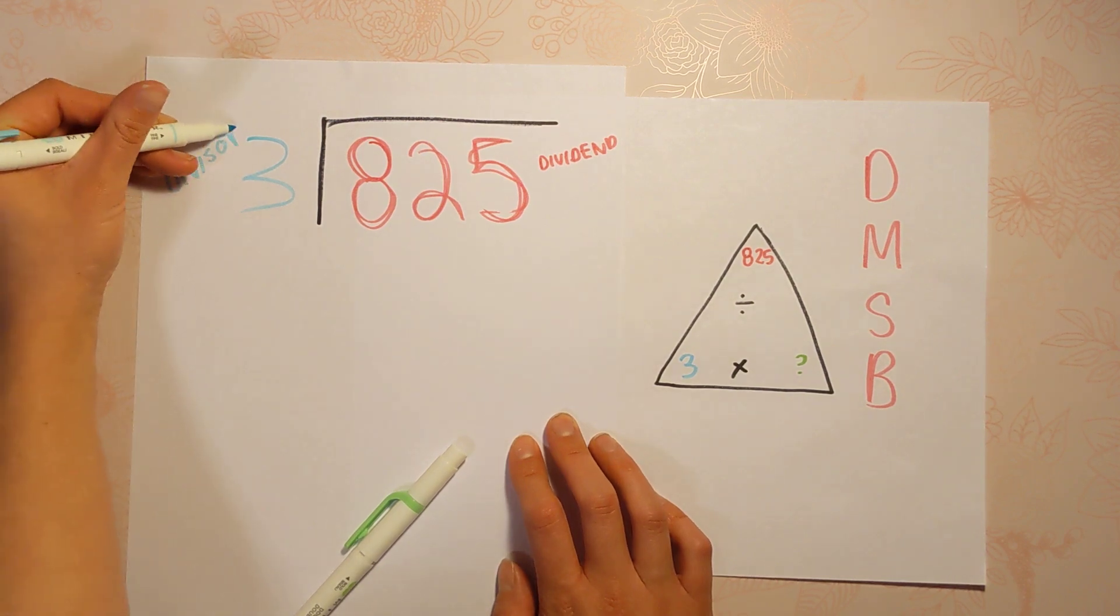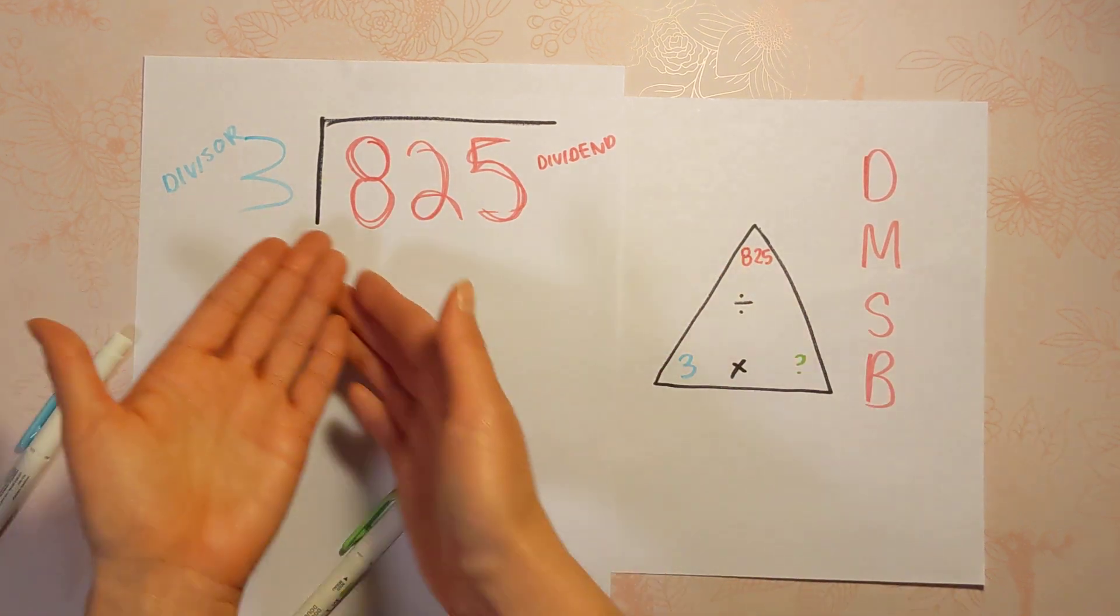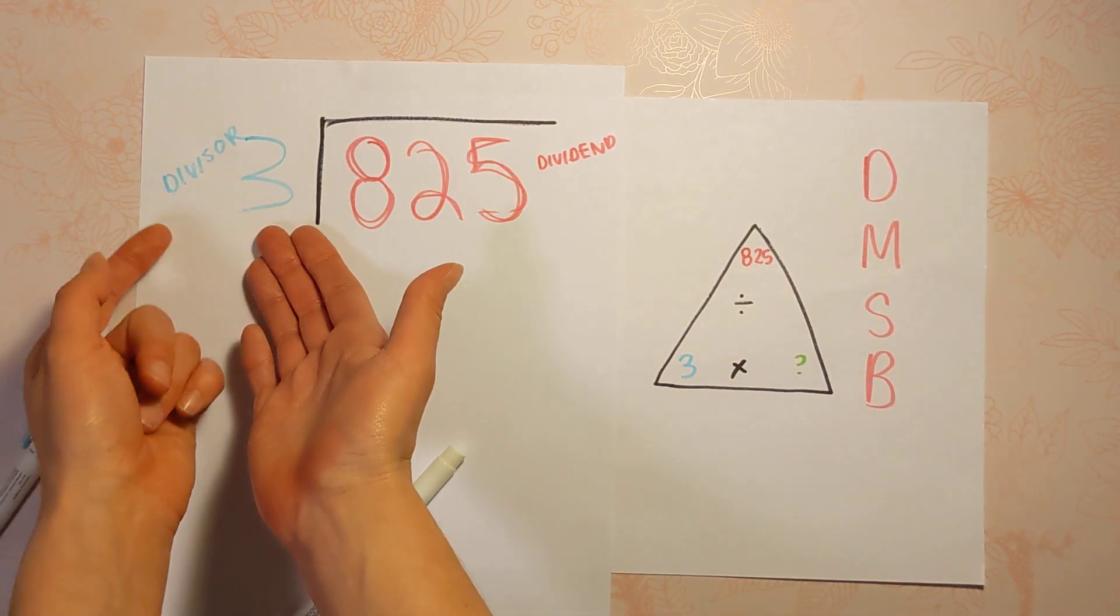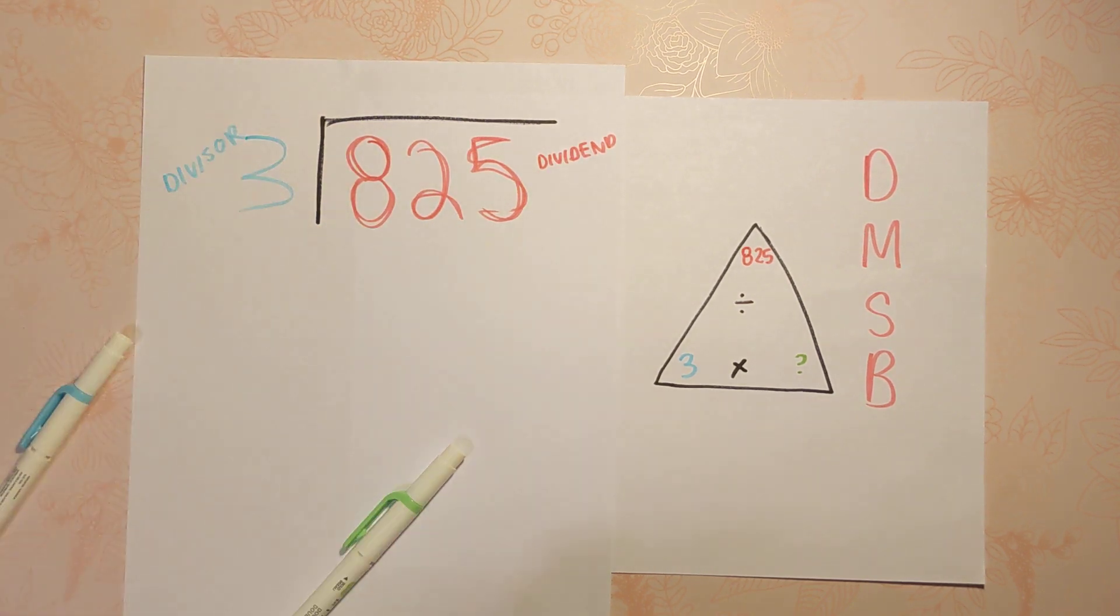So for example, let's say I have 825 candy bars and I'm going to divide them up among three friends, lucky friends. The divisor is 3, my friends.